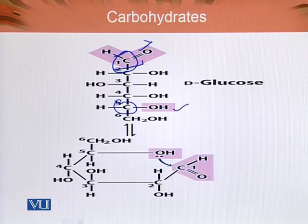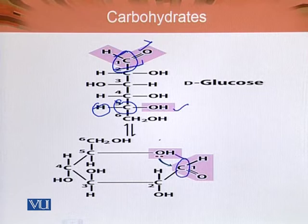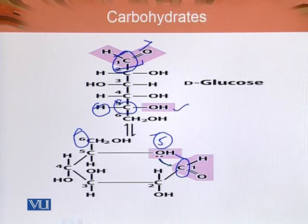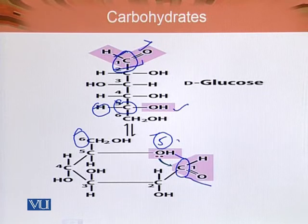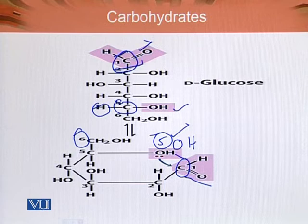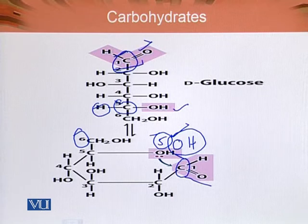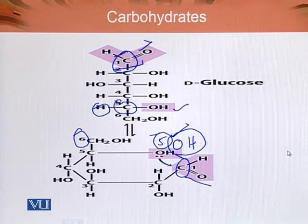This is carbon atom number 1, which contains the aldehyde group. And it reacts with the OH of carbon atom number 5, which as we know is the alcoholic group. So it is forming a cyclization between C1 and C5 — between the aldehyde and the alcoholic group of the same molecule.